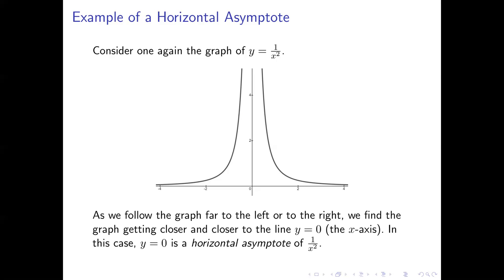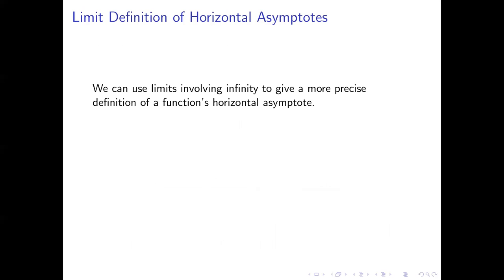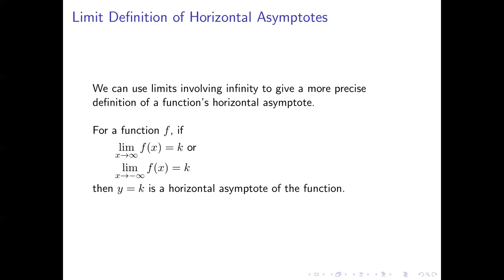We're looking at what happens as we move further and further to the left or to the right without stopping. That idea allows us to define horizontal asymptotes in terms of limits. If the limit as x approaches infinity of a function f is some number k, or as x approaches negative infinity, f of x equals k, then the line y equals k is a horizontal asymptote of f.